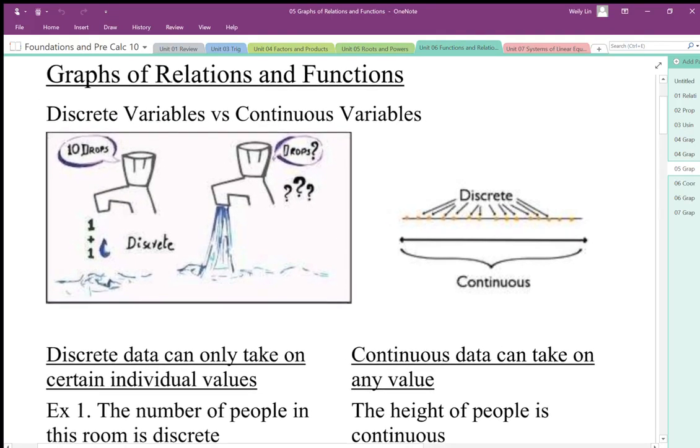A discrete variable is when we have just discrete pieces. For example, if we have drops of water, we can count the individual drops. Whereas if we have a continuous flow, it's hard to count the individual drops of water.